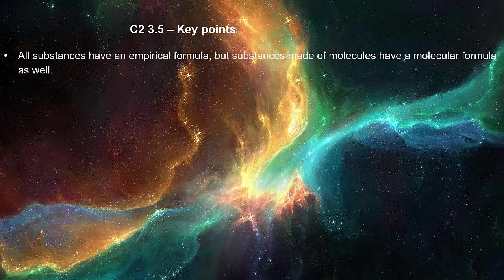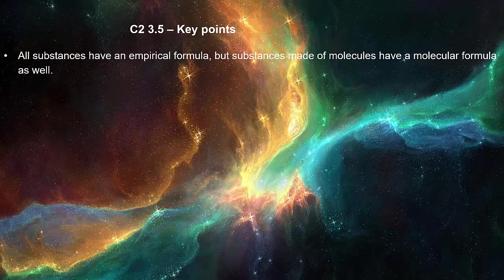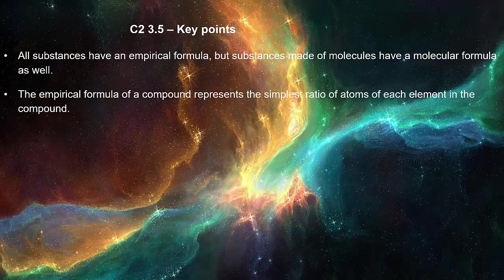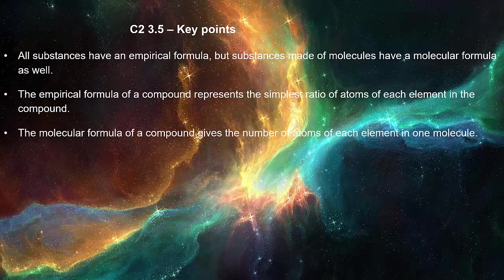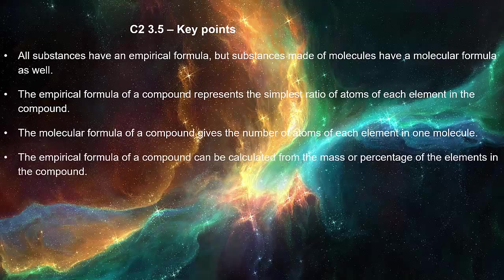All substances have an empirical formula, but substances made of molecules have a molecular formula as well. The empirical formula of a compound represents the simplest ratio of atoms of each element in the compound. The molecular formula of a compound gives the number of atoms of each element in one molecule. The empirical formula of a compound can be calculated from the mass or percentage of the elements in the compound.